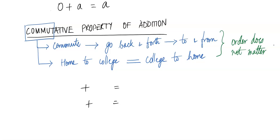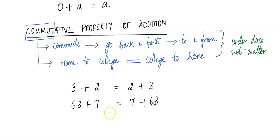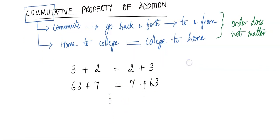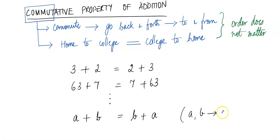So 3 plus 2 is the same as 2 plus 3. 63 plus 7 is the same as 7 plus 63. If you extend this argument and want to generalize it — remember we need two things to add, and one of them is not a 0 like in the identity property. When you have to add two different things, you want to generalize them with two different letters. So what we're saying is if A is a number and B is a number, A plus B will be the same as B plus A.